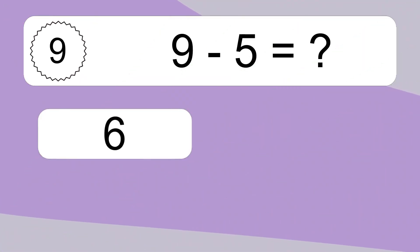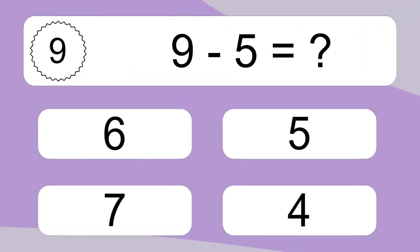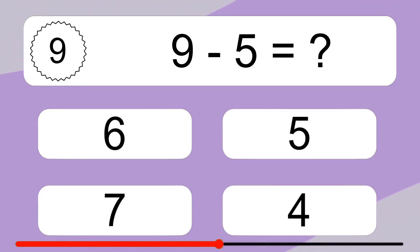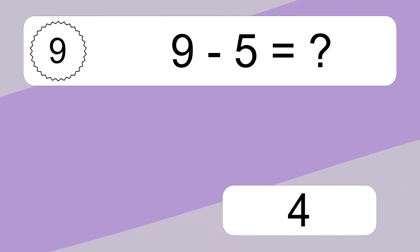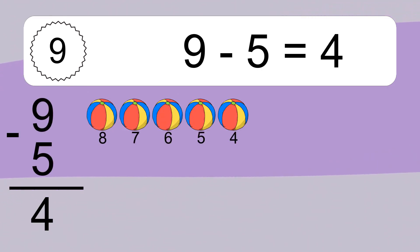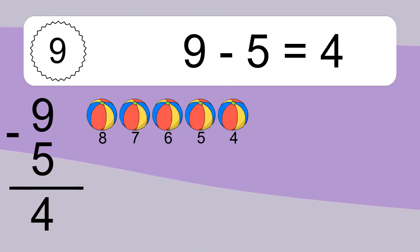9 minus 5 equals what? 9 minus 5 equals 4. Let's count it: 8, 7, 6, 5, 4.